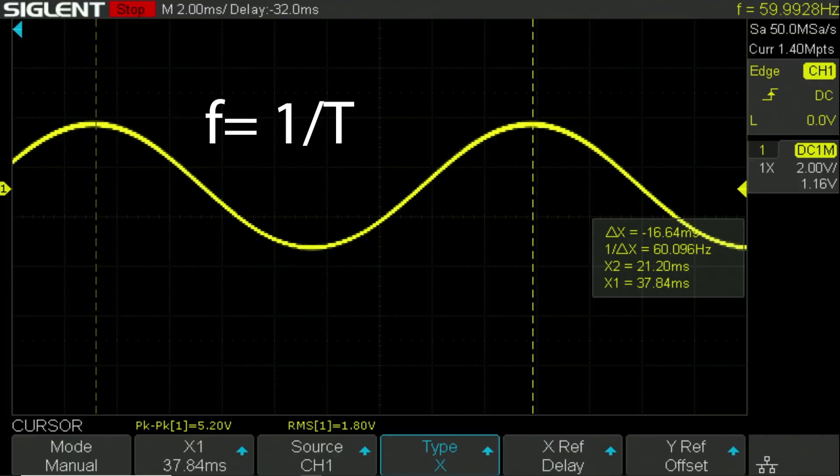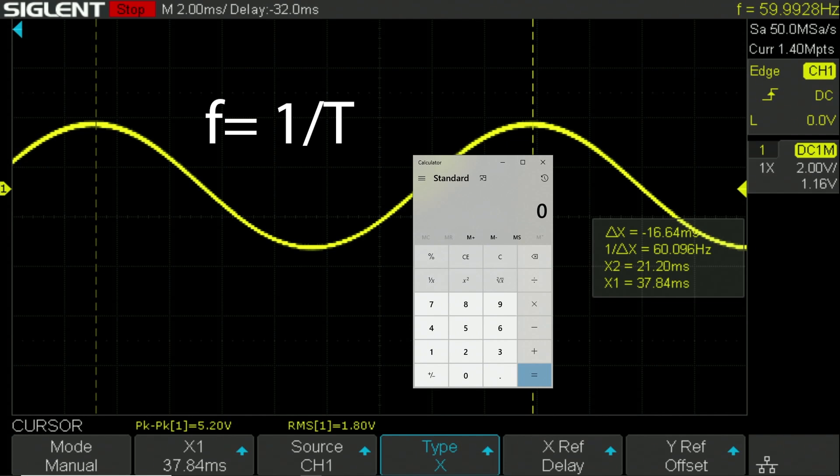Let's bust out our calculator and we said one divided by the time it takes for one cycle to happen will equal our frequency in Hertz. So, I'm going to go ahead and hit one divided by the 16.64 milliseconds. Now it's very important to make sure we keep our units the same and we want to be using seconds. So, 16.64 milliseconds is equal to 0.01664.